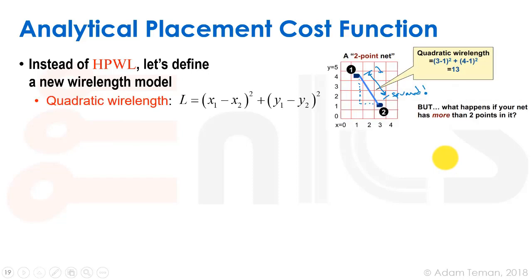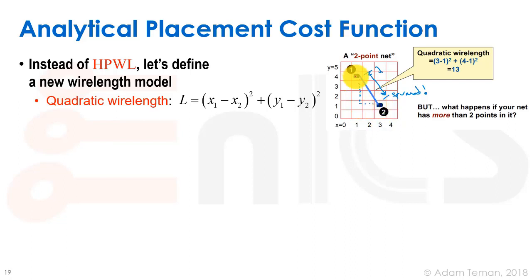Let's rewrite our cost function to make it mathematically friendly. We'll use a cost function called quadratic wire length. The quadratic wire length is the distance squared between two points: (x1 - x2)² + (y1 - y2)². For example, if one gate is at (1, 4) and another at (3, 1), we take (3 - 1)² + (4 - 1)² and get a total quadratic wire length of 13.